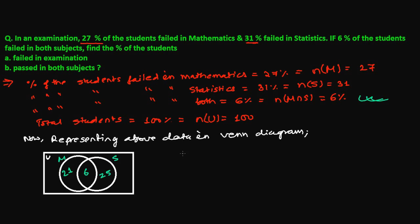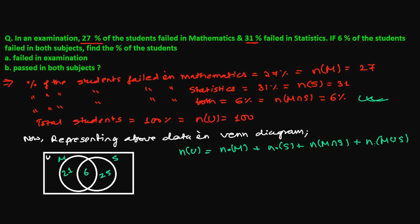So now the total number of students is: number of students who just failed in mathematics, plus number who failed just in statistics, plus number who failed in both math and statistics, plus number who neither failed in math nor statistics — that complement. N(M∪S) without the bar means students who failed in math or statistics or both, and with the complement means students who neither failed in math nor statistics.